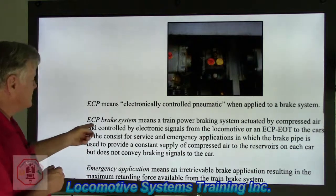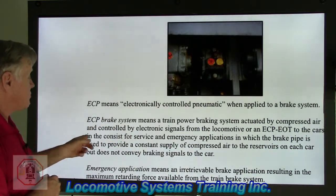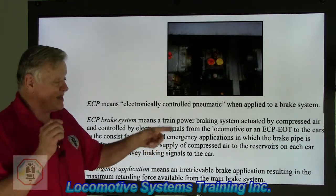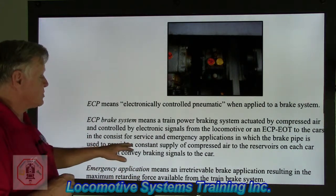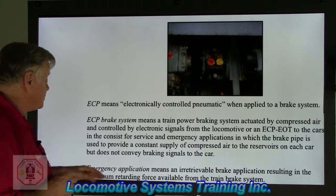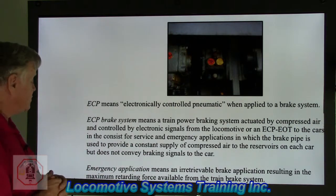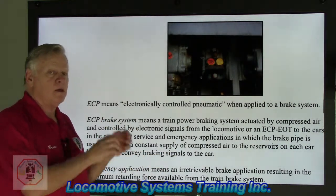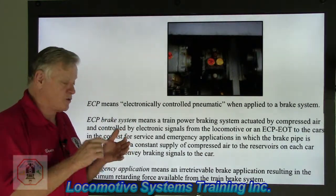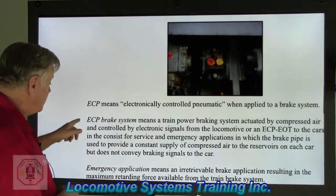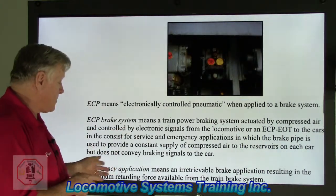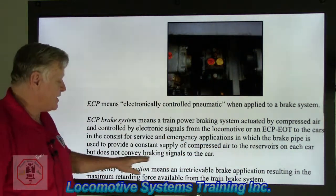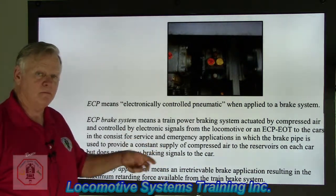ECP brake system means a train power braking system actuated by compressed air and controlled by electronic signals from the locomotive or ECP EOT device to the cars for service and emergency applications, in which the brake pipe provides a constant supply of compressed air to the reservoirs on each car but does not convey braking signals. In a conventional air brake system, the brake pipe both charges the cars and serves as the air signal to apply and release brakes. On ECP brakes, the brake pipe strictly charges reservoirs — the braking signals are done electronically. That's a big difference.